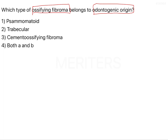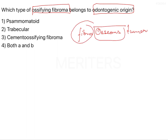I will be discussing the cemento-ossifying fibroma, which is a distinct form of a benign fibro-osseous tumour. That means there will be fibres as well as a bony component in this particular tumour, and what happens is the osseous part keeps changing from the fibrous part in this particular kind of tumour.